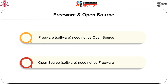If the source code is released, users can modify the program as per their requirement or further distribute it to someone else. In open source software, both the binary and the source code can be shipped together. The reason open source is becoming popular is that along with the object code, we are also providing source code — so if the user wishes, he can modify and customize that particular program.